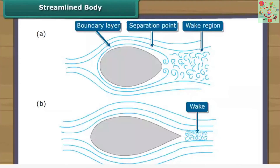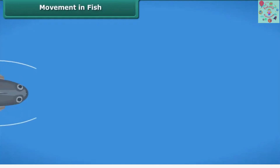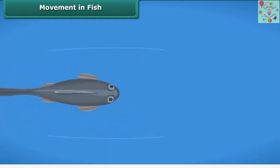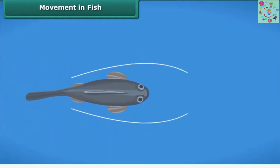Now we'll study about the streamlined body. The shape of many objects moving through air or water is designed to reduce friction between the object and the medium. This shape is called a streamlined body. Fish have a streamlined body which helps them move fast in water.